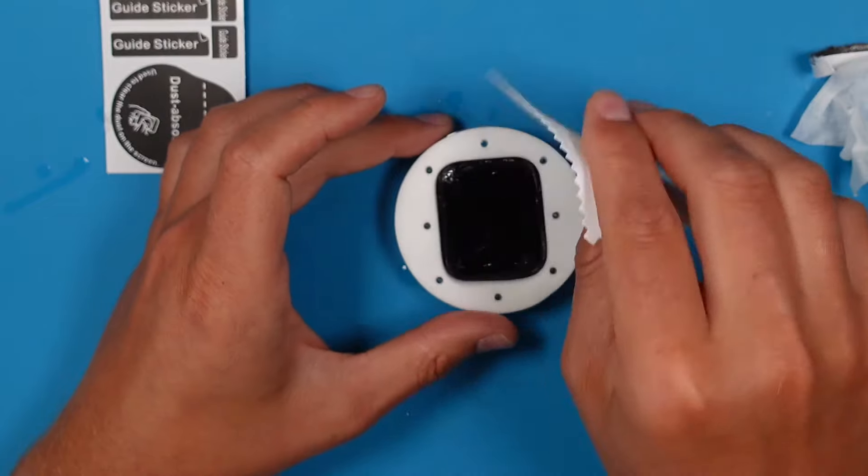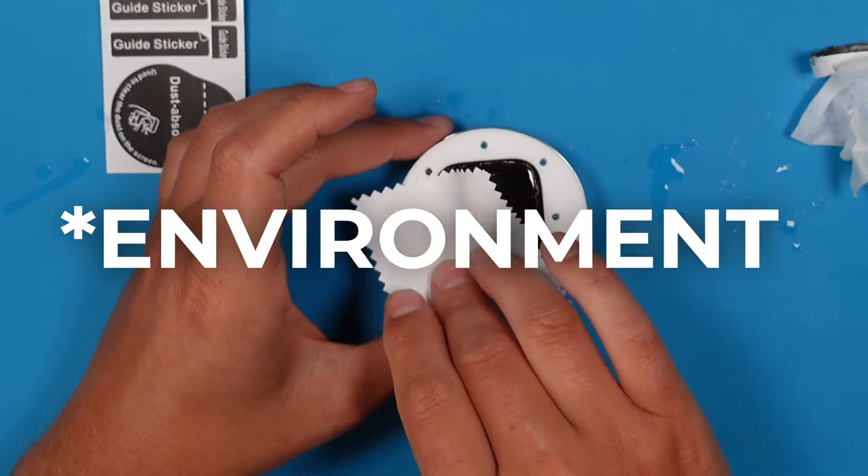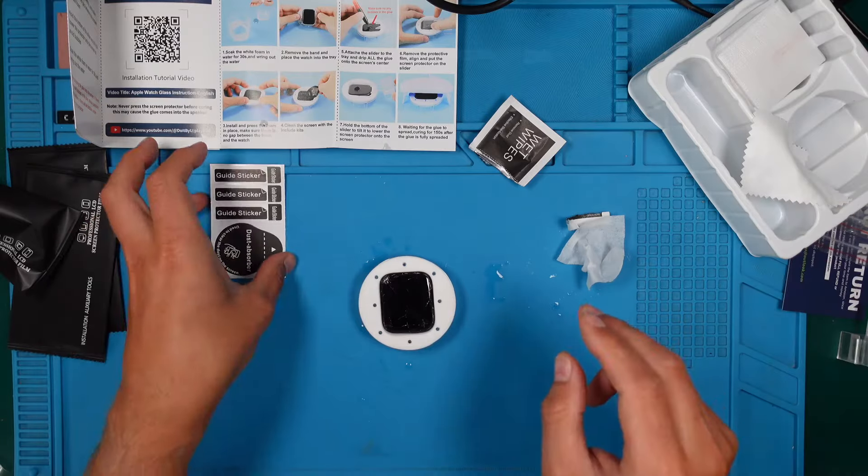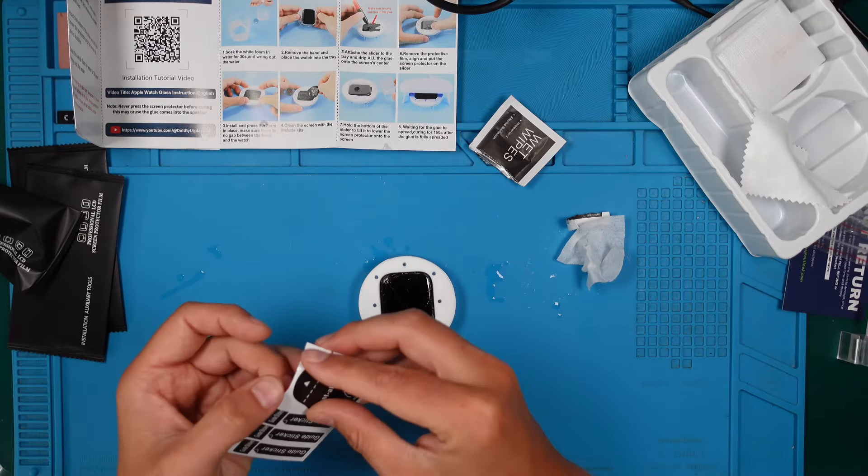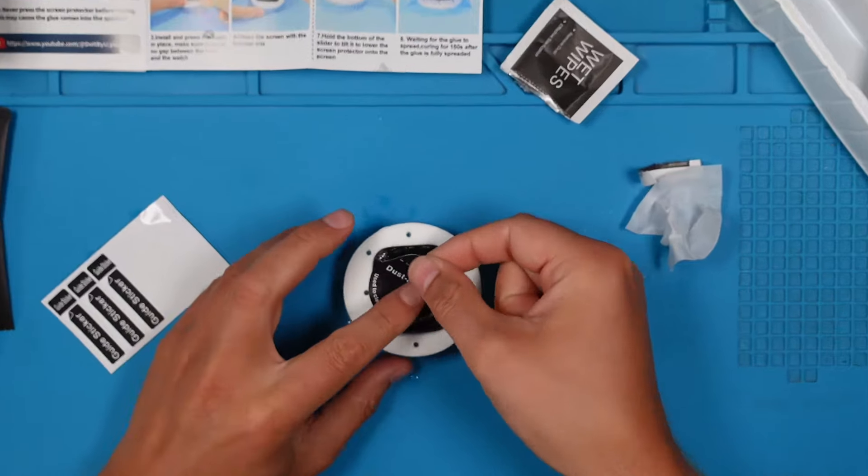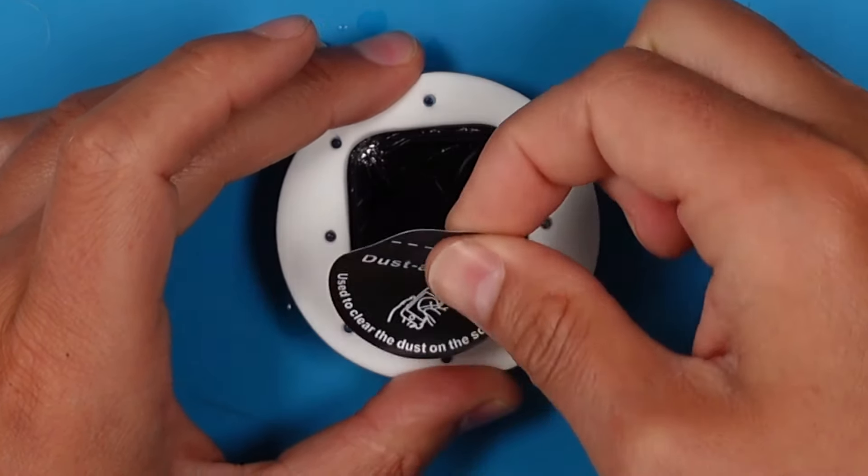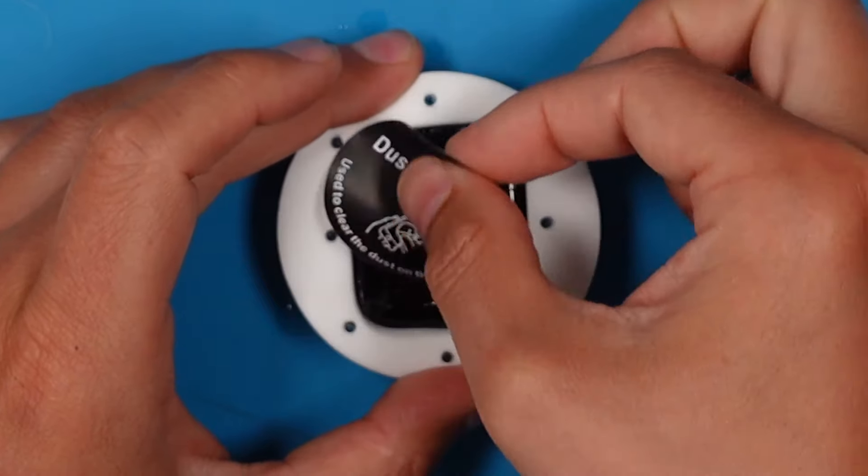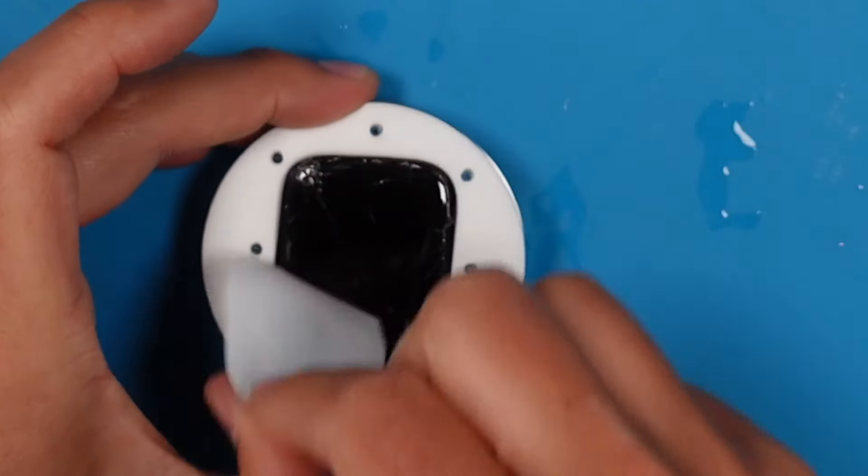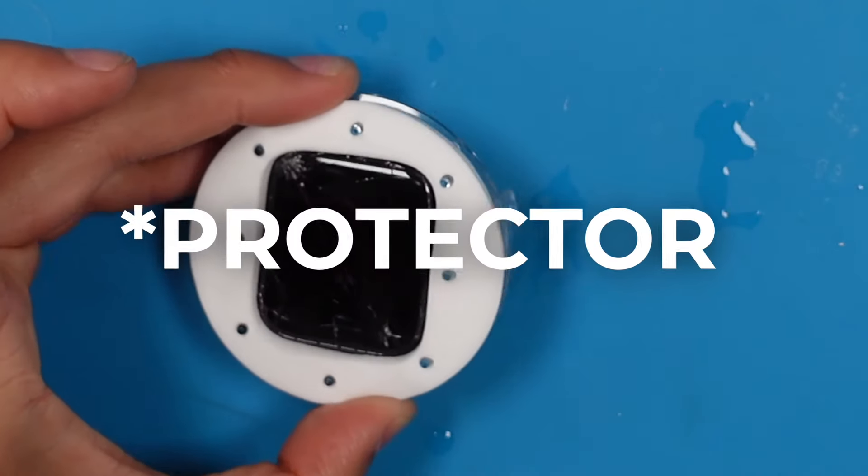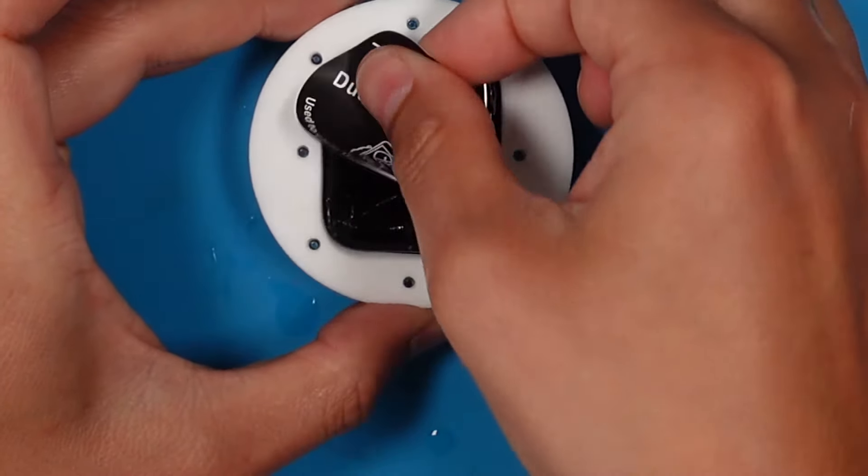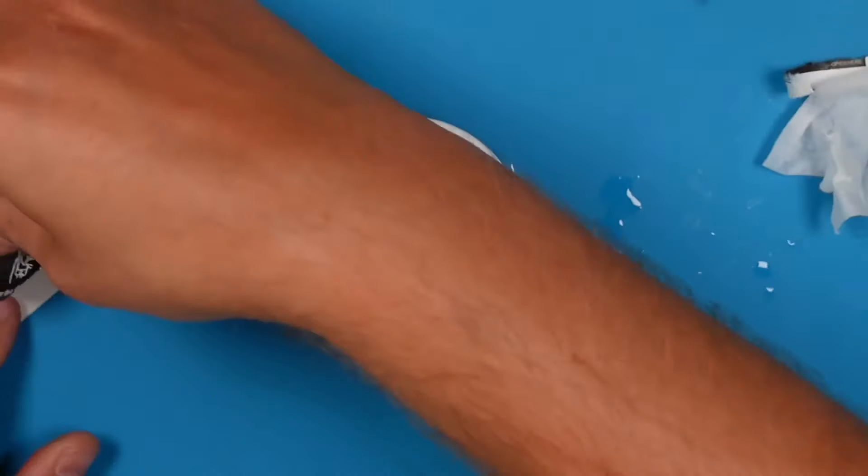Like any screen protector, try to avoid any dusty area of course. Okay, now let's use the dust absorber here. It's basically just a sticker. And try to remove anything that could ruin our new screen. It's very hard to judge with the shattered screen, but we will see.